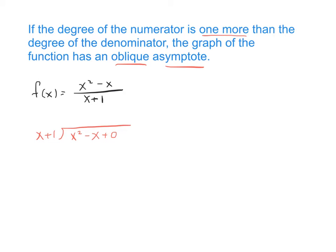We divide. x squared divided by x is x. Multiply. x times x is x squared plus x. Subtract. We get negative 2x. I'll bring down the zero.